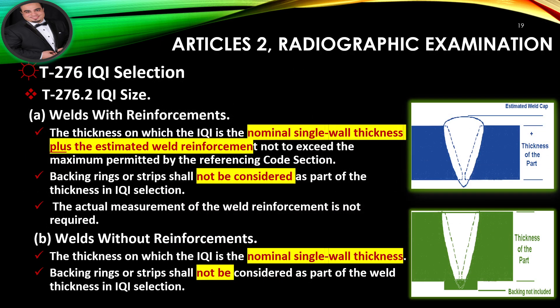IQI Size — For welds with reinforcements: the thickness on which the IQI is based is the nominal single wall thickness plus the estimated weld reinforcement, not to exceed the maximum permitted by the referencing code section. Backing rings or strips shall not be considered as part of the thickness in IQI selection; actual measurement of weld reinforcement is not required. For welds without reinforcements: the thickness is the nominal single wall thickness, and backing rings or strips shall not be considered as part of the weld thickness in IQI selection.